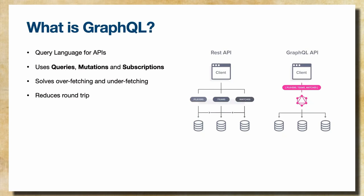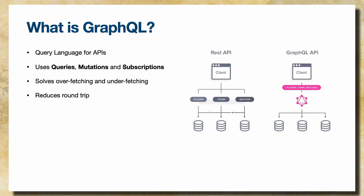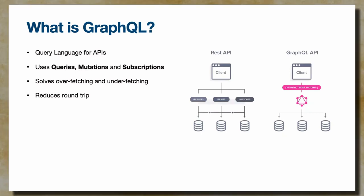GraphQL was born to resolve pain points that REST API has. There are two: overfetching, where you call an API and get more data than you need; and underfetching, the opposite — you don't get enough data back, forcing a follow-up request to complete the original intent. GraphQL solves that and also reduces the round-trips the client needs to complete a transaction.